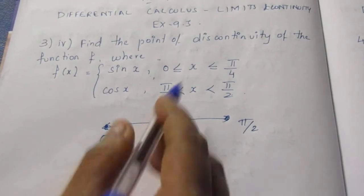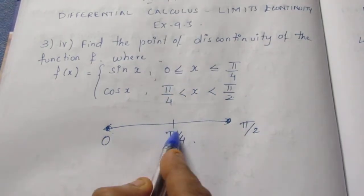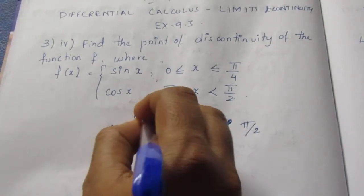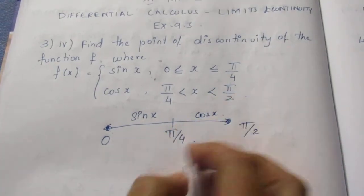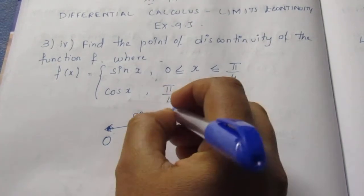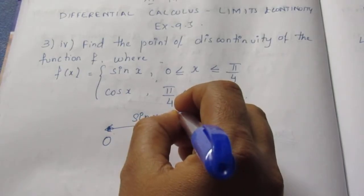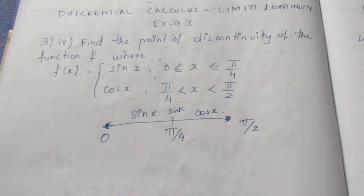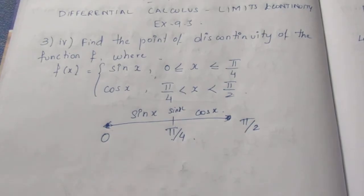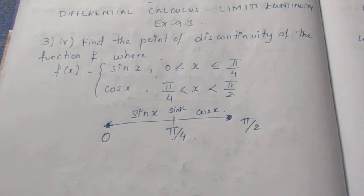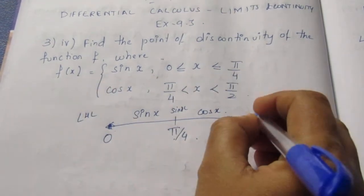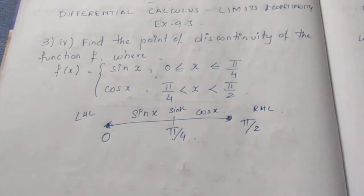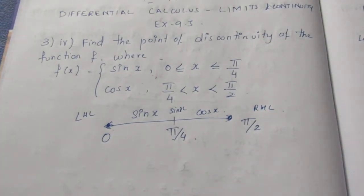If x is less than or equal to π/4, that is sin x. If we look between π/4 and π/2, that is cos x. At x = π/4, we compute the left-hand side limit (LHL) and the right-hand side limit (RHL) to check continuity.